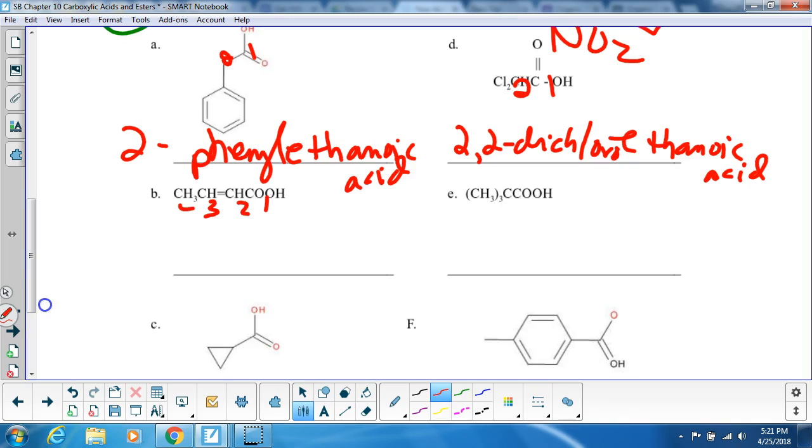I'm going to number it again, one, two, three, four. So it has something with a but, but what's on carbon number two? It's a double bond. So how do I deal with that? I put an E-N-oic acid. So butenoic acid. I'm going to draw the next one,